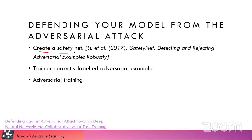The first defense is to create a safety net. You have a neural network, and you create another neural network which will check whether the image is adversarial or not — meaning whether the image is real or fake. After that, you pass it to the neural network which is doing the classification.